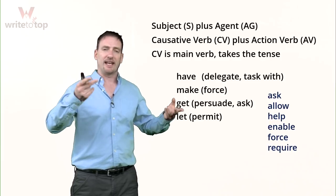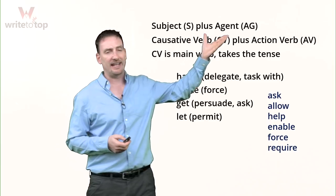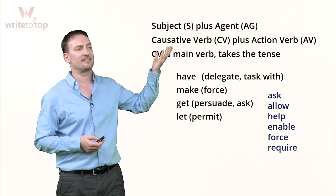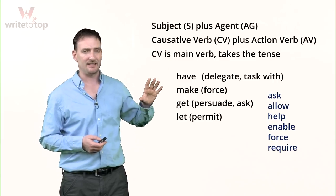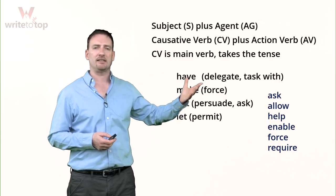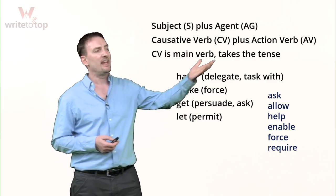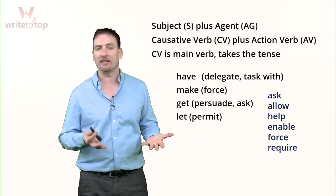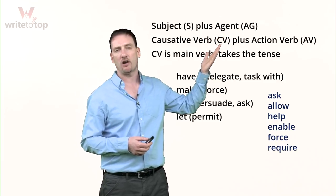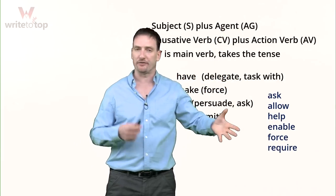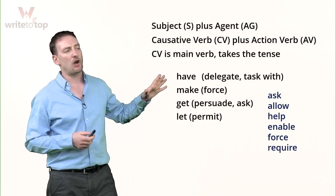You're going to have two verbs as well: a subject with a verb and an agent with a verb. The subject has the causative verb — this is the main verb, it takes the tense. If you're talking about the past, the causative verb takes the past; future, the causative verb takes the future. The action verb is what is actually happening in the sentence. S = subject, AG = agent, CV = causative verb, AV = action verb.